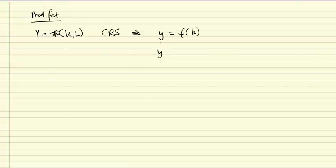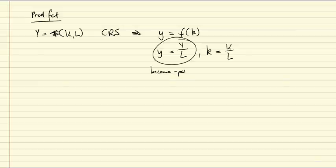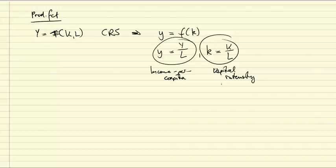Where y is income per capita and lowercase k is capital intensity. So here, income or output per person per capita, and here the capital intensity. So these are the two variables in the model. We will derive a diagram that gives us y as a function of k.